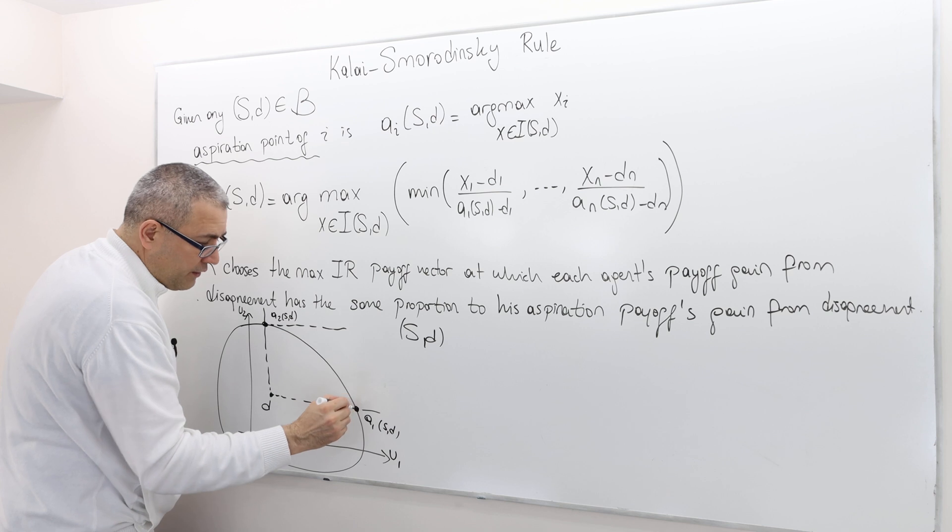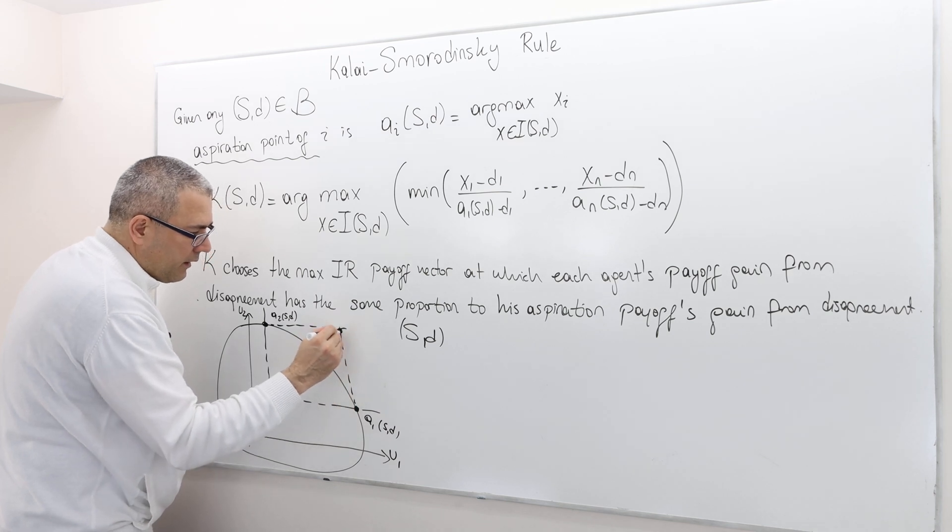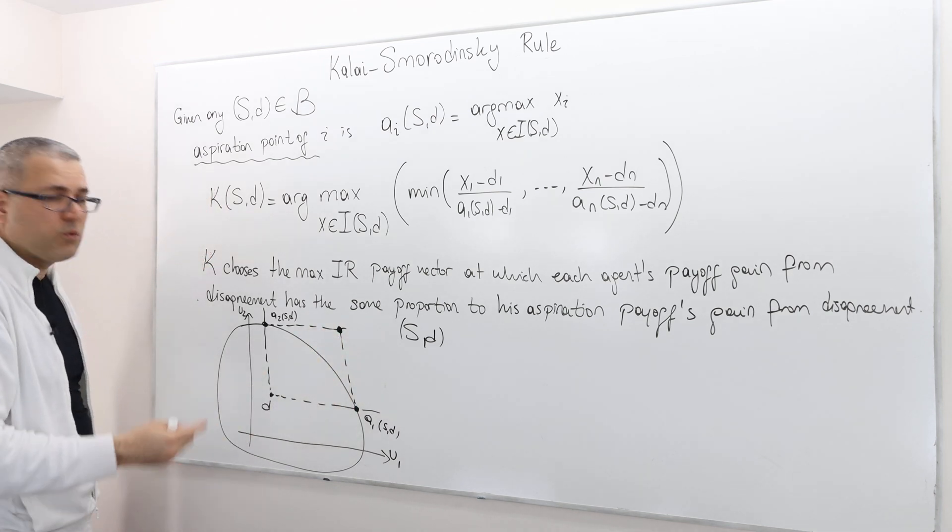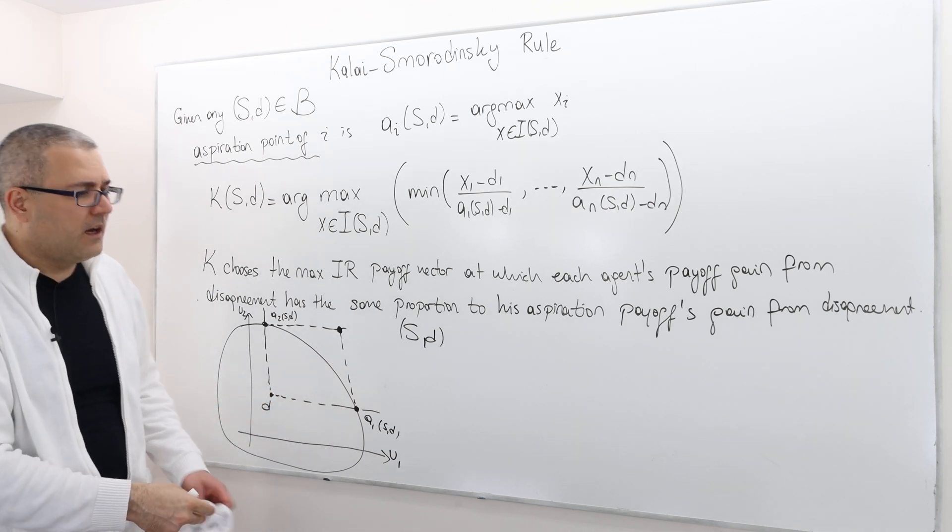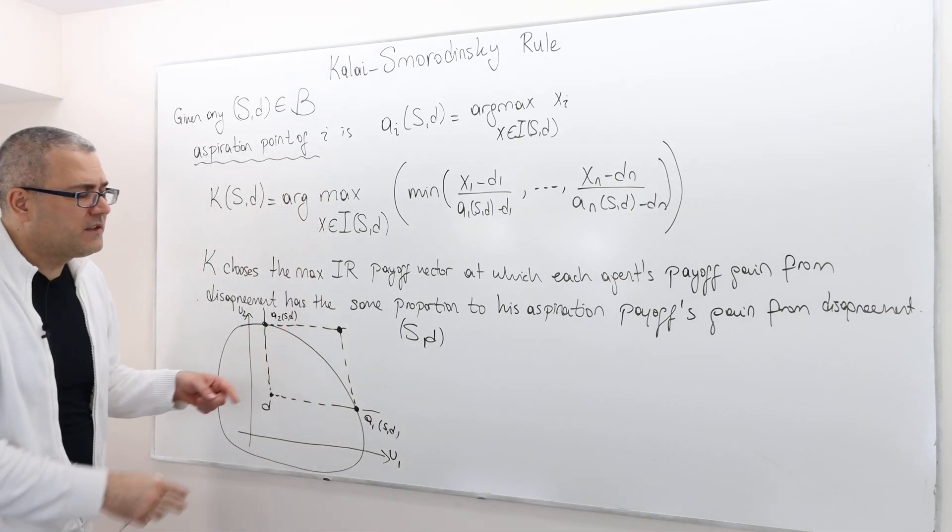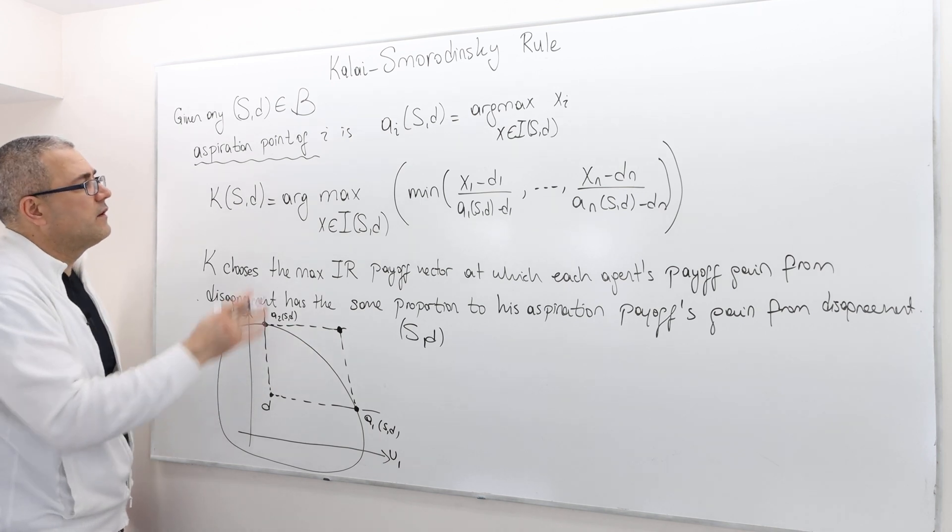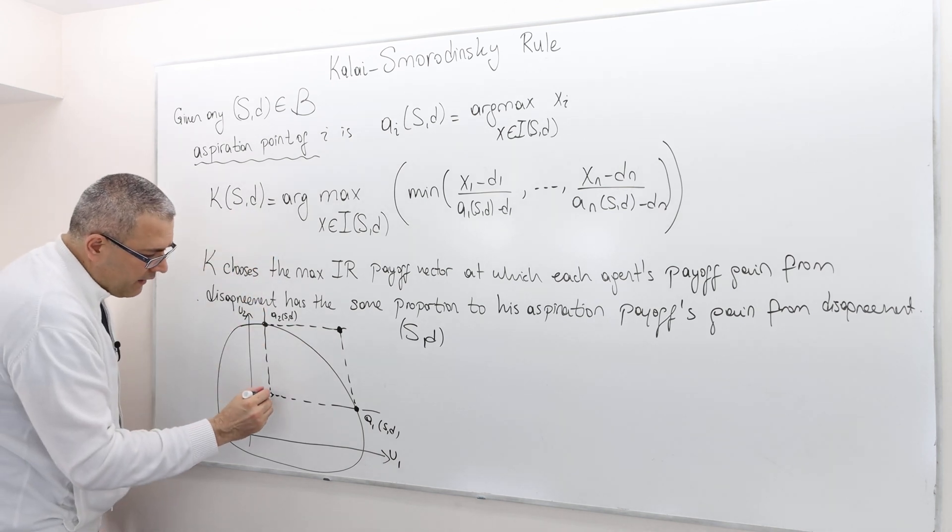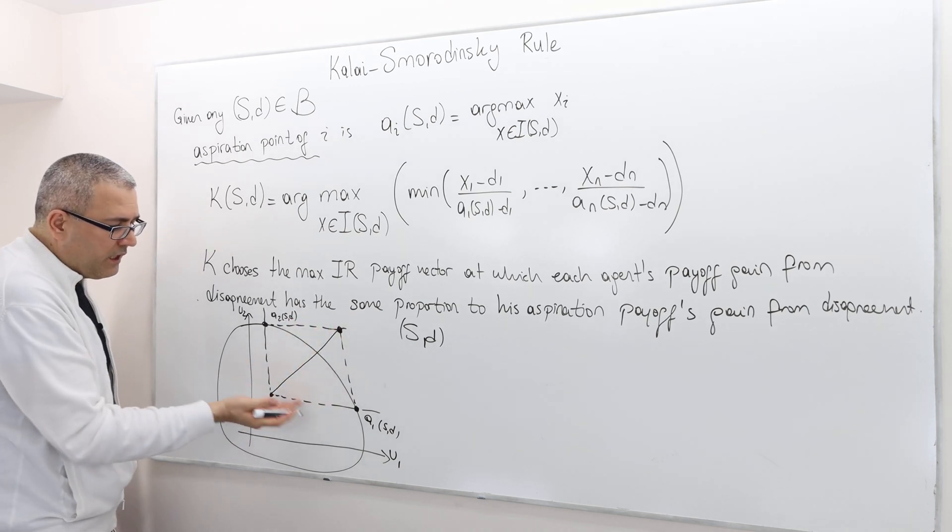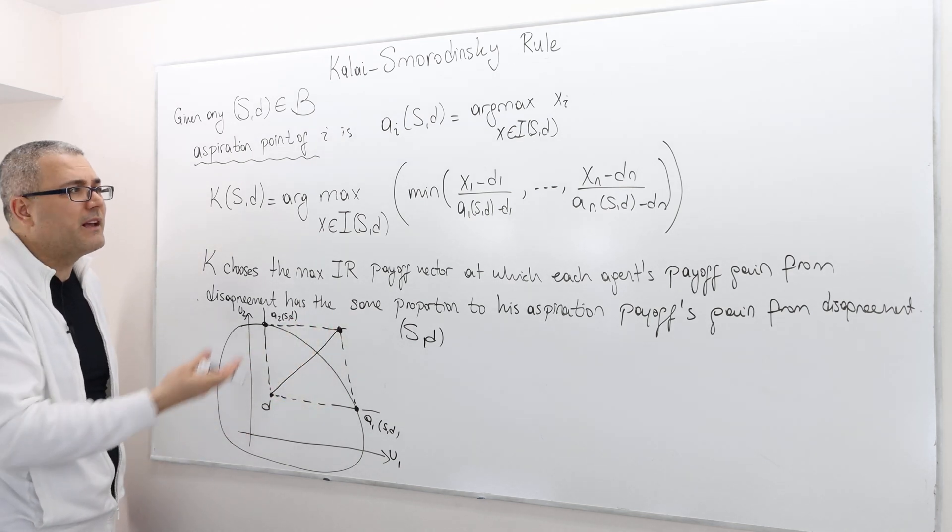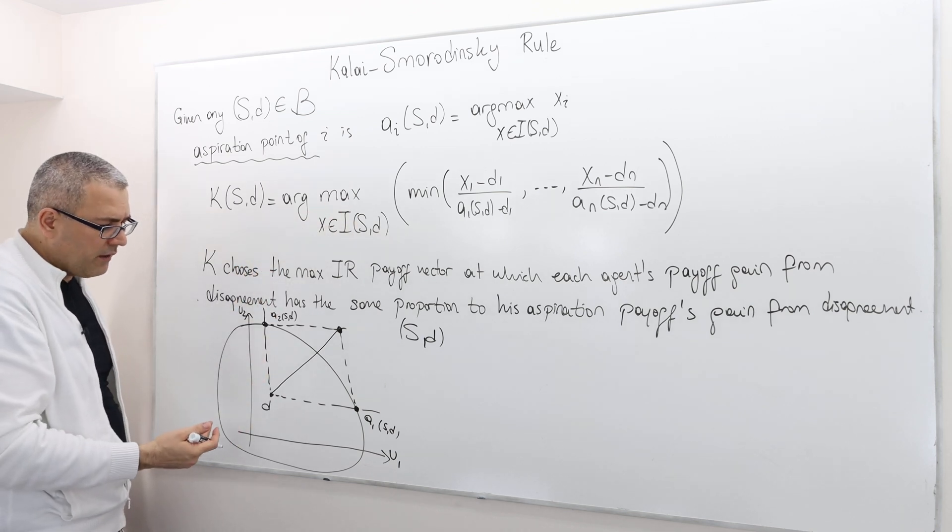Geometrically speaking, we know that this point where both agents get their best payoff is impossible because it's not feasible. What this rule does is say: I would like to keep the ratio the same as much as possible.